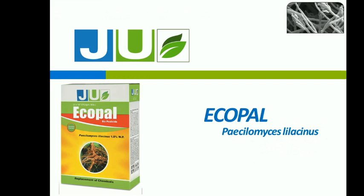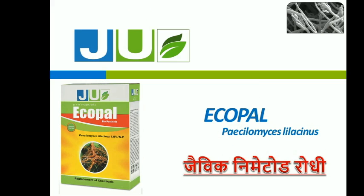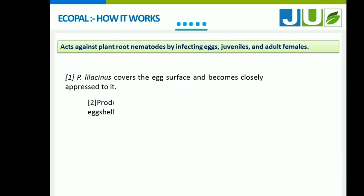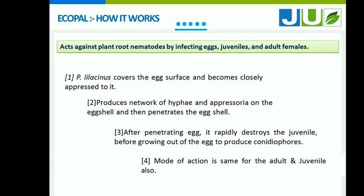Ecopal is a bio-nematicide for control of nematodes. It acts against plant root nematodes by infecting eggs, juveniles, and adults. Ecopal covers the egg surface and becomes closely appressed to it, producing a network of hyphae and appressoria on the eggshell, then penetrates the eggshell. After penetrating the egg it rapidly destroys the juvenile before growing out of the egg to produce conidiophores.